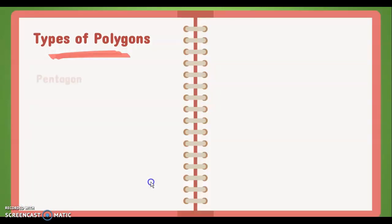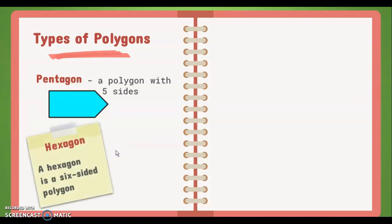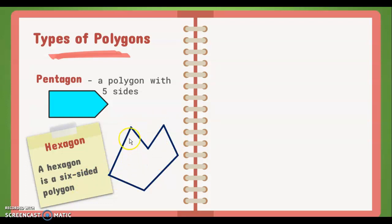Polygons with five sides are called pentagons. This polygon has five sides and is called a pentagon. Next, a hexagon has six sides. It may have a fun shape, but as long as it has six sides it is still called a hexagon.